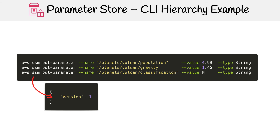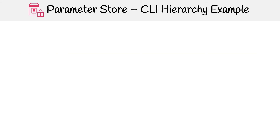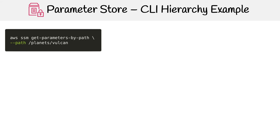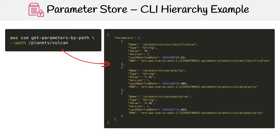We put three parameters here on Vulcan. To get all the parameters in one go, we would use get parameters by path. Here we can just specify planets/Vulcan and all the parameters underneath will be returned to us.